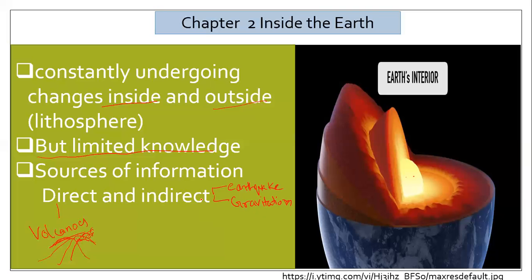Magnetism is also found in the Earth. Meteors are another indirect source — sometimes they fall deep into the Earth, and when the area is opened we get an idea of what the Earth is made of, since meteors are almost the same composition. Temperature and pressure also give us information about what things are inside the Earth.